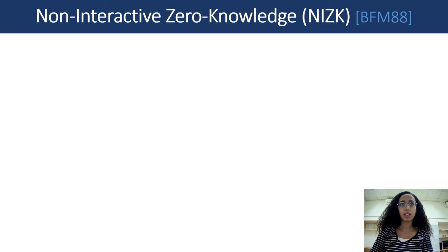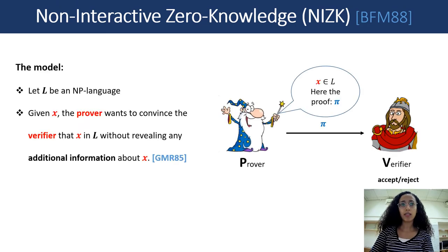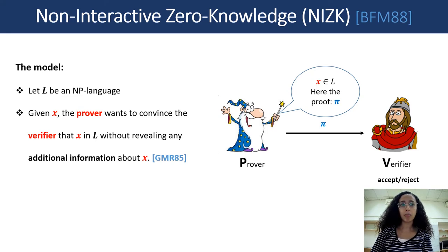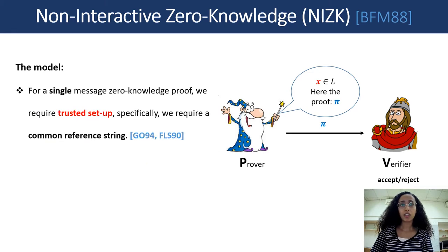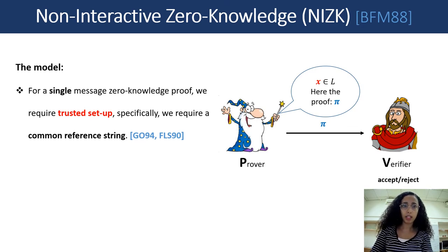First, I want to define non-interactive zero-knowledge. Assume we have an NP language and we have two parties, Prover and Verifier. The prover wants to convince the verifier that some statement is true without revealing any additional information about the statement. We are talking about non-interactive proof systems, so the prover can send to the verifier only a single message. For achieving non-interactive zero-knowledge, we need to require a trusted setup. Specifically in this talk, we will consider the common reference string model.